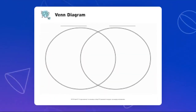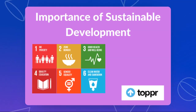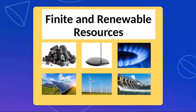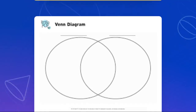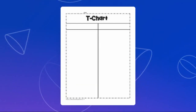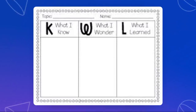We are also going to be using different types of graphic organizers, as you can see. We will learn how to use Venn diagrams related to the different types of resources when comparing and contrasting renewable and non-renewable resources. We are also going to be using a T-chart to find the differences between finite and infinite resources. And we're going to be using different strategies, such as a KWL chart — what I know, what I wonder, and what I learned.